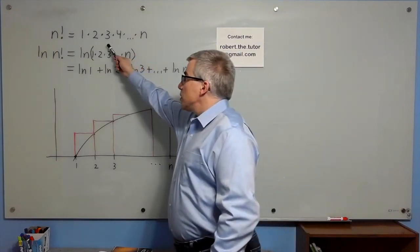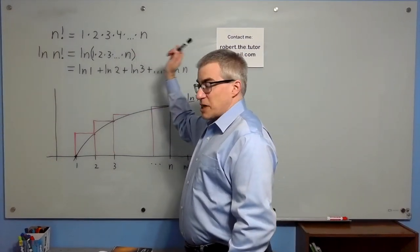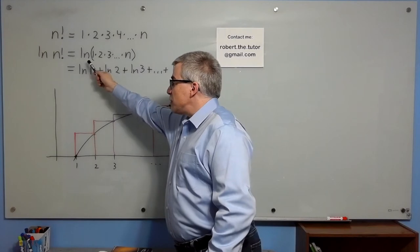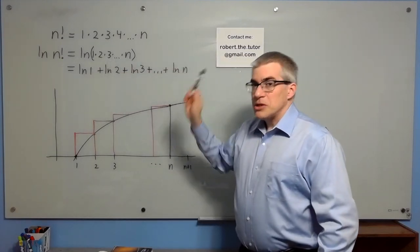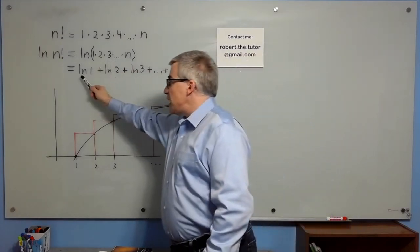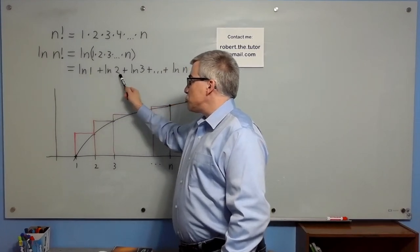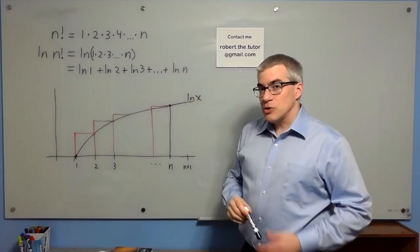n factorial is 1 times 2 times 3 up to n. Natural log of n factorial is the natural log of that product. By the laws of logarithms, we can split that up into natural log 1 plus natural log 2 plus natural log 3 up to natural log n.